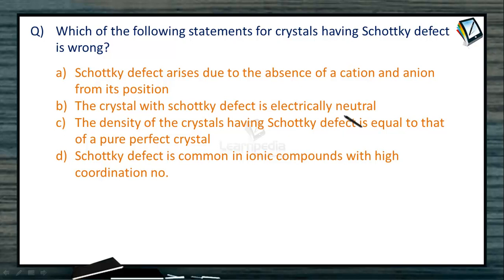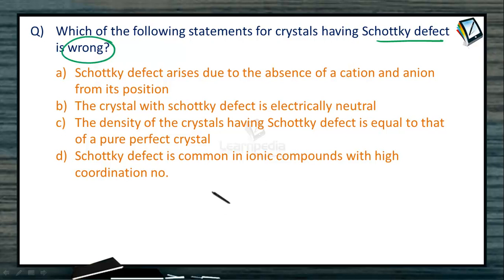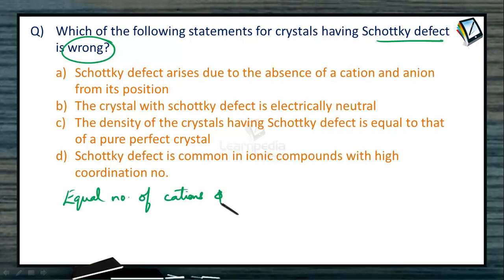This is the objective related to crystal defects, in particular the Schottky defect. In the above four statements, we need to find out which of them is wrong related to the Schottky defect. How is the Schottky defect formed? It is due to the equal number of cations and anions missing from their lattice sites.